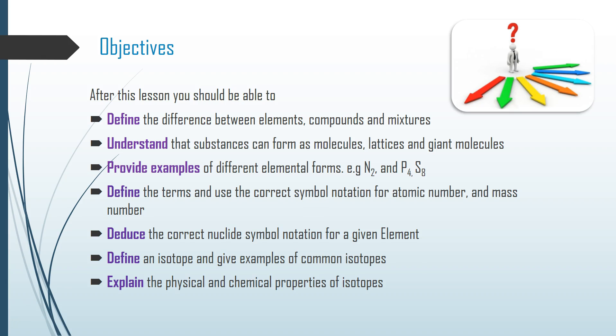These are the objectives that we need to know as we start our look at basically the fundamentals of chemistry or atomic structure. By the end of this you need to be able to define the difference between elements, compounds, and mixtures; understand that substances can form as molecules, lattices, and giant molecules; be able to give examples of different elemental forms as well as use the terms correctly for different symbol notation and atomic number and mass number.